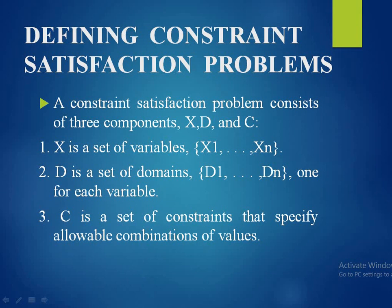A constraint satisfaction problem consists of three components: X, D, and C. X is the set of variables X1, X2 up to Xn. D is the set of domains D1, D2 up to Dn — one domain for each variable, so if there are N variables there are N domains. C is the set of constraints that specify allowable combinations of values.